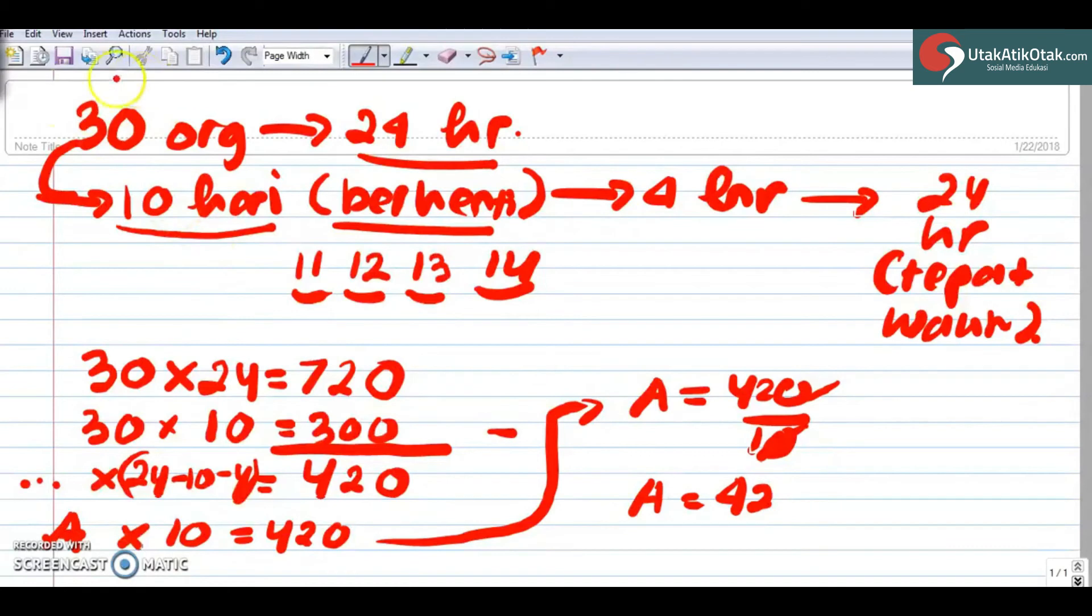Nah, tambahannya, tambahannya dari 30 ke 42 adalah tambah 12 orang. Nah, jadi gitu cara ngejainya.